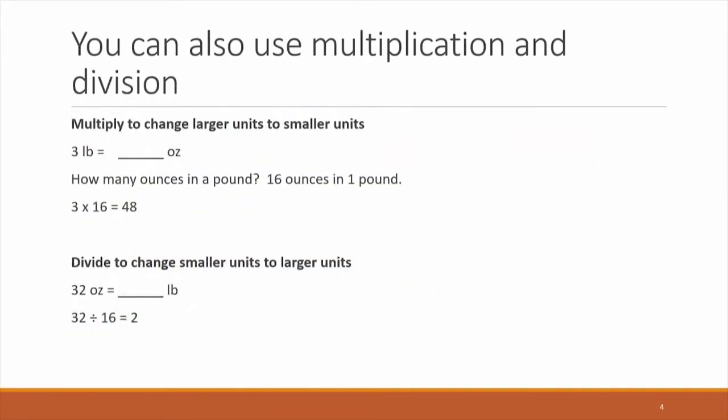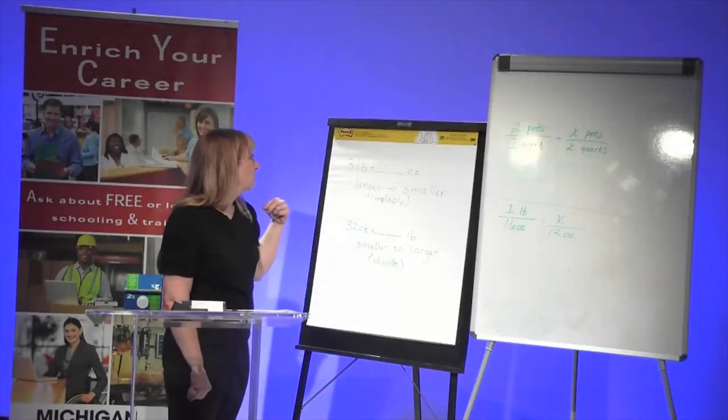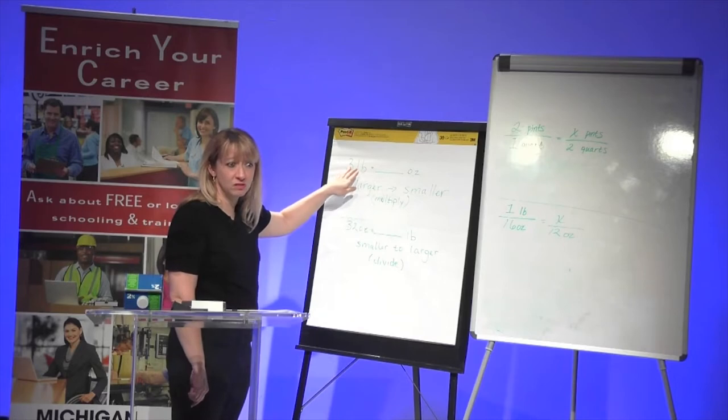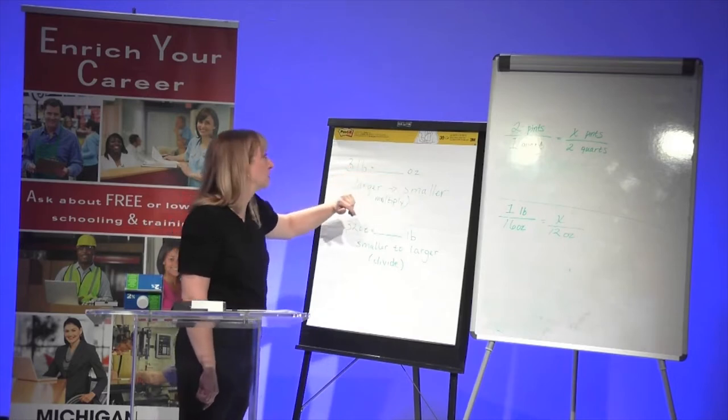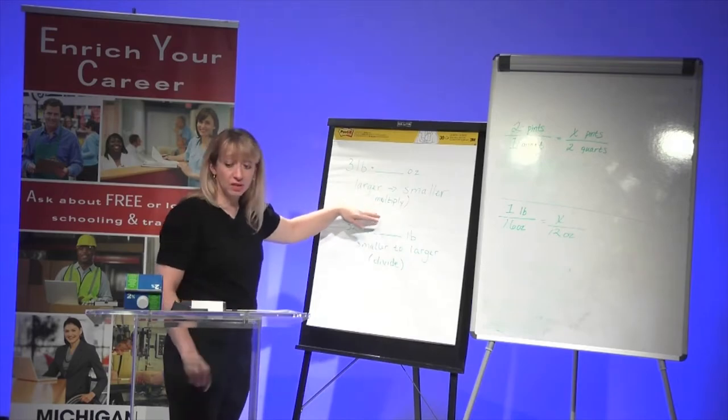The next slide we're going to look at just shows you a different way you can do the problem, another way to look at it. So if you have to find three pounds, you want to find how many ounces that is. So you're going from a larger unit to a smaller one because one pound is greater than one ounce. So if you're going from larger to smaller, you can simply multiply.